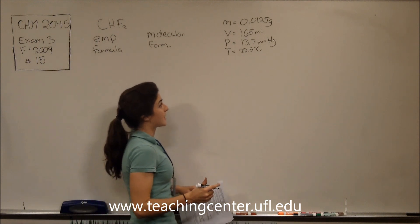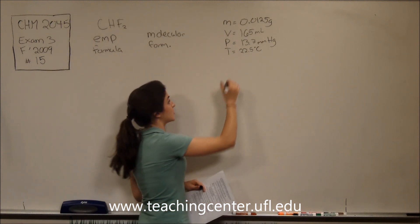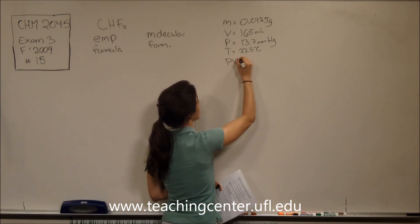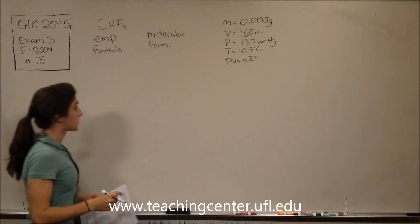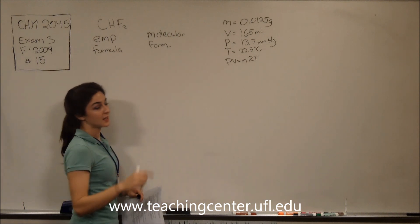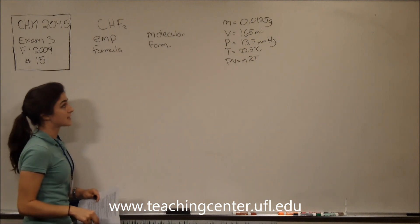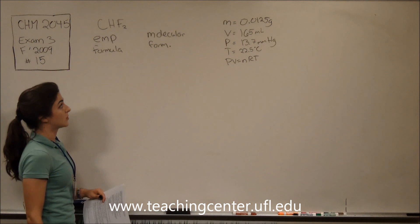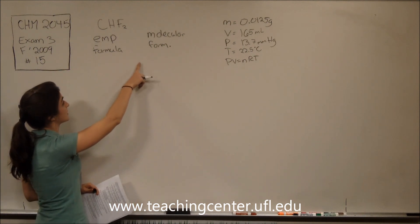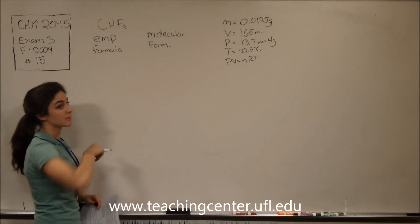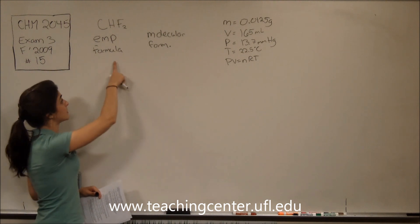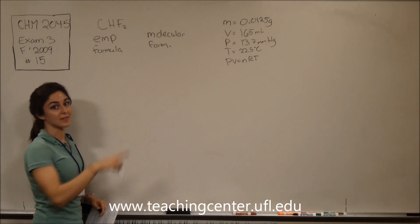Now we can assume that this is an ideal gas, so we can use the PV=nRT equation if we need to. So what we're looking for is the molecular formula, and the thing you need to know about this is that the molecular formula is basically a whole number multiple of the empirical formula. The empirical formula is the smallest ratio of each of these atoms.